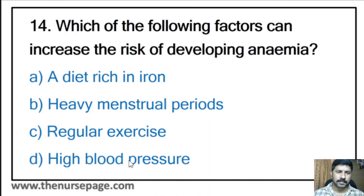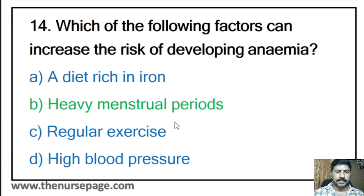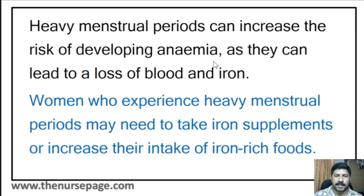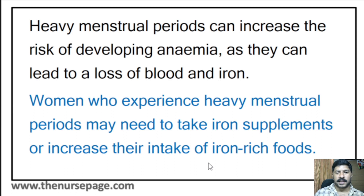Fourteenth question: Which of the following factors can increase the risk of developing anemia? A diet rich in iron, heavy menstrual periods, regular exercise, or high blood pressure? The correct answer is heavy menstrual periods. Heavy menstrual periods can lead to a loss of blood and iron. Women who experience this may need to take iron supplements or increase their intake of iron-rich foods initially, before moving to supplements if uncontrolled.